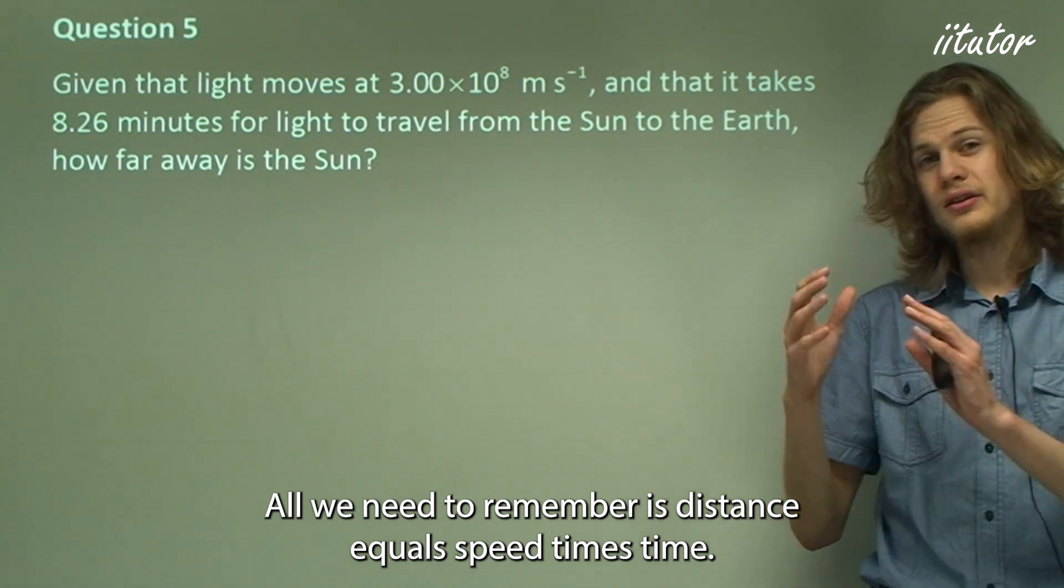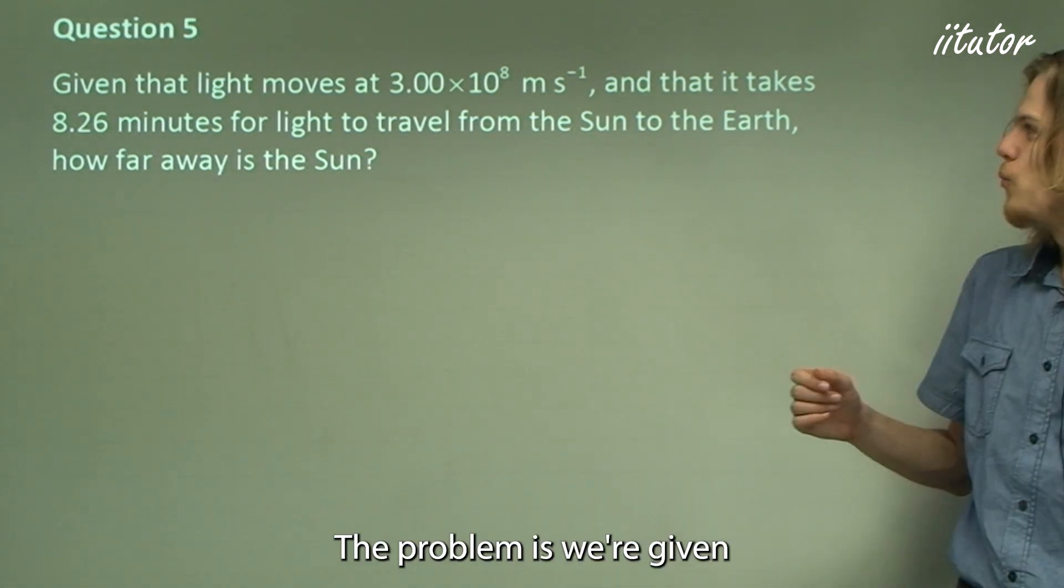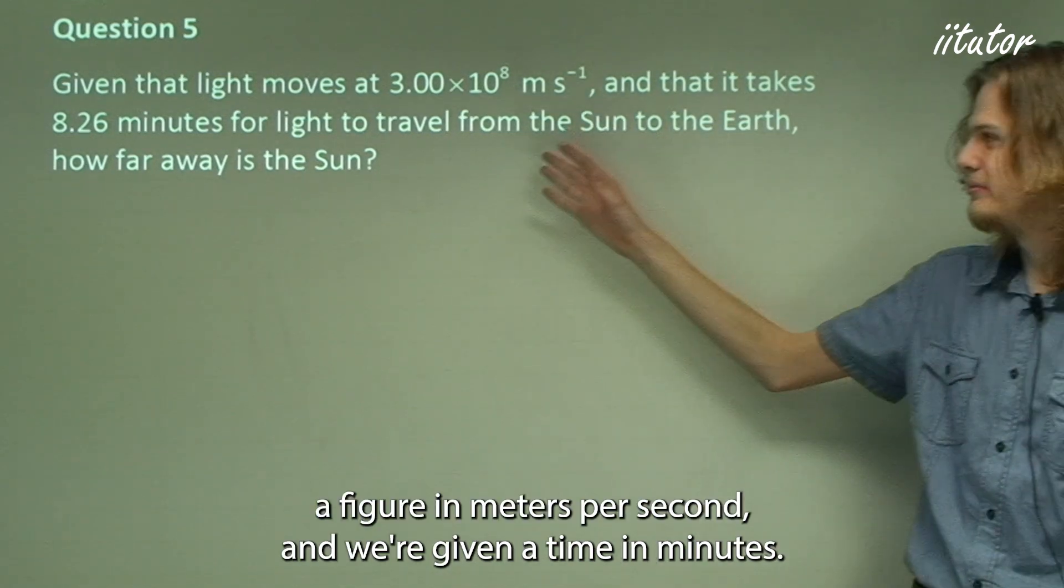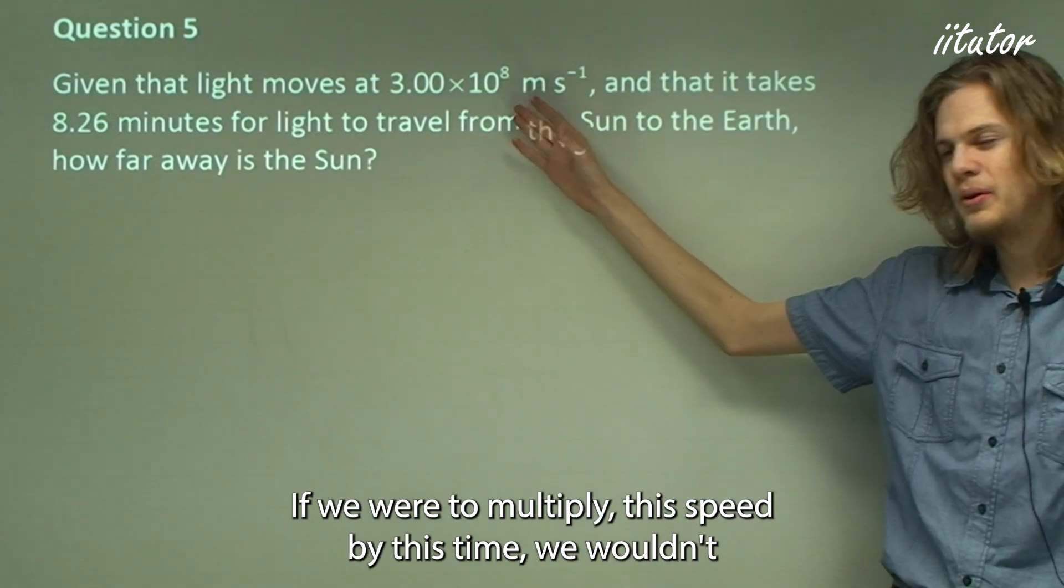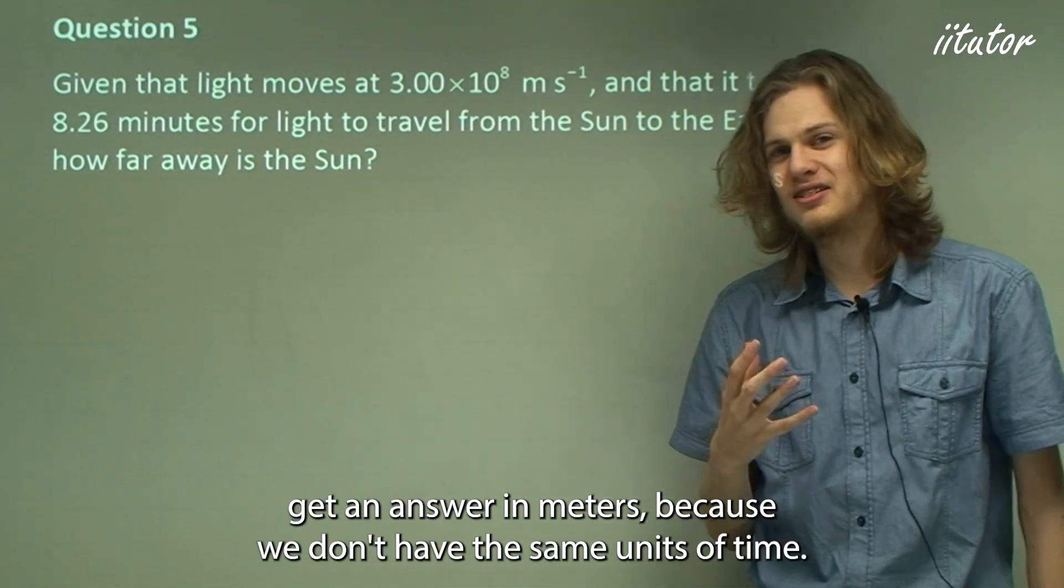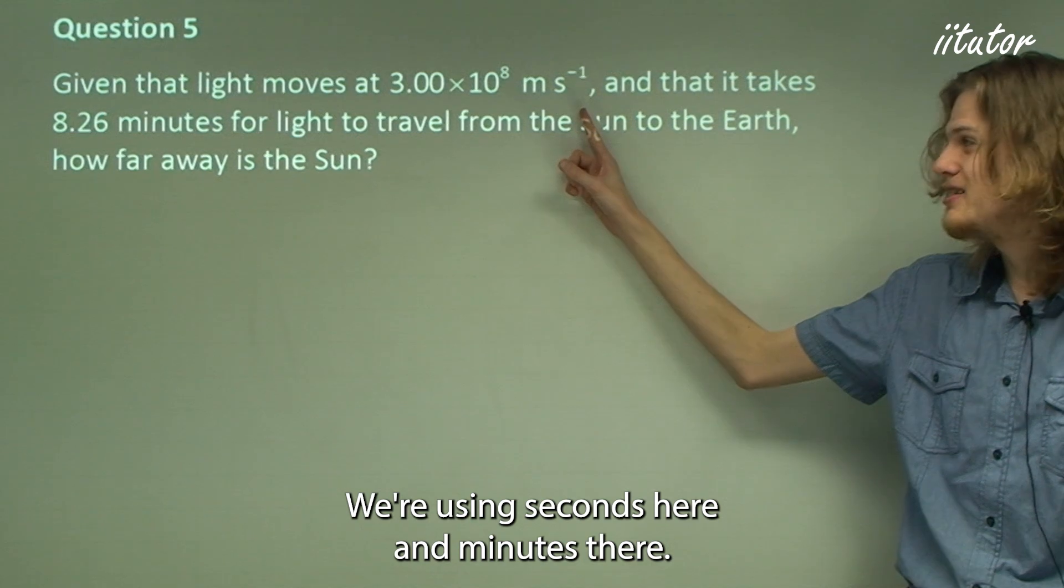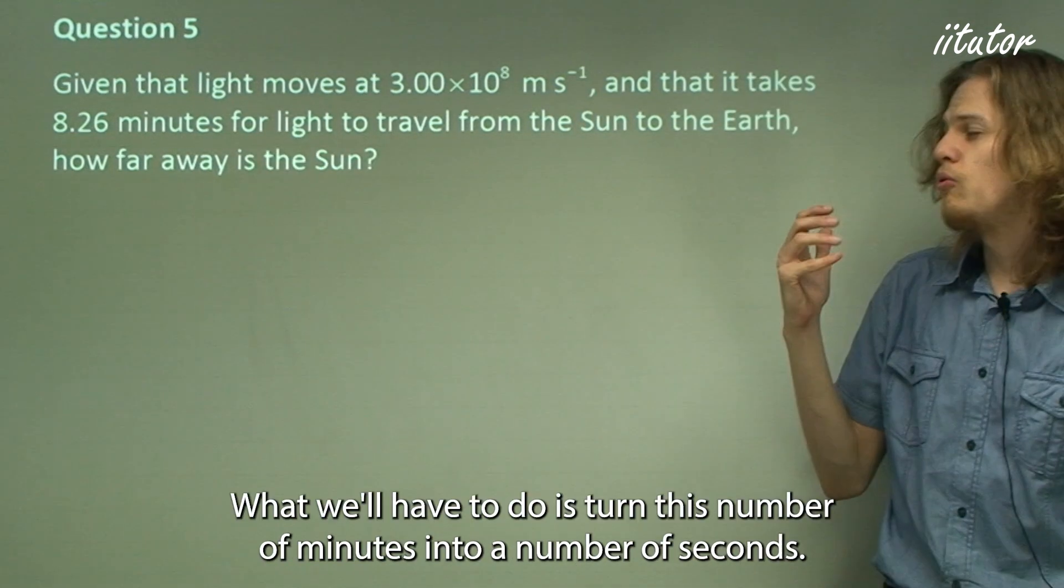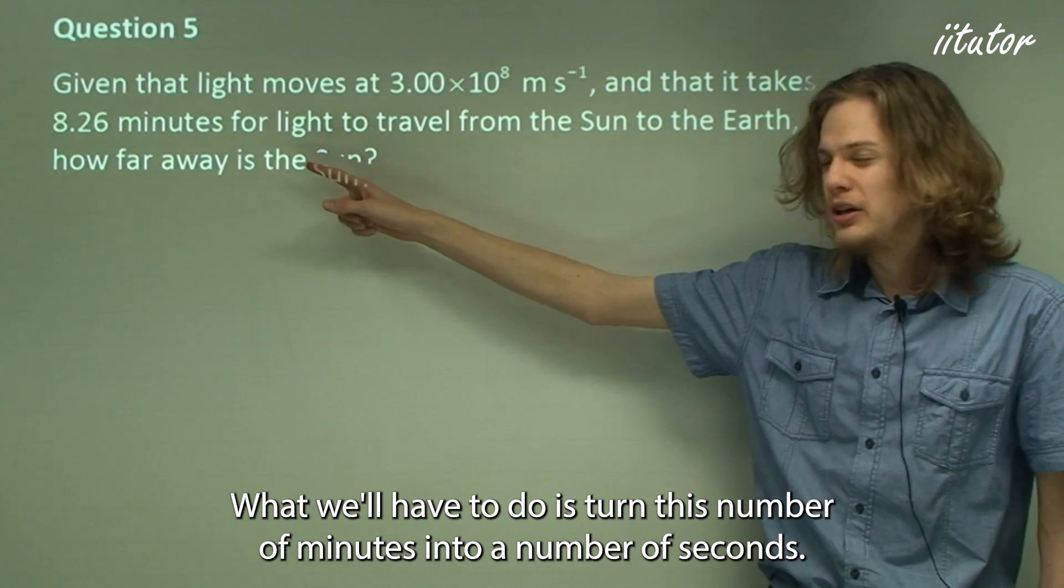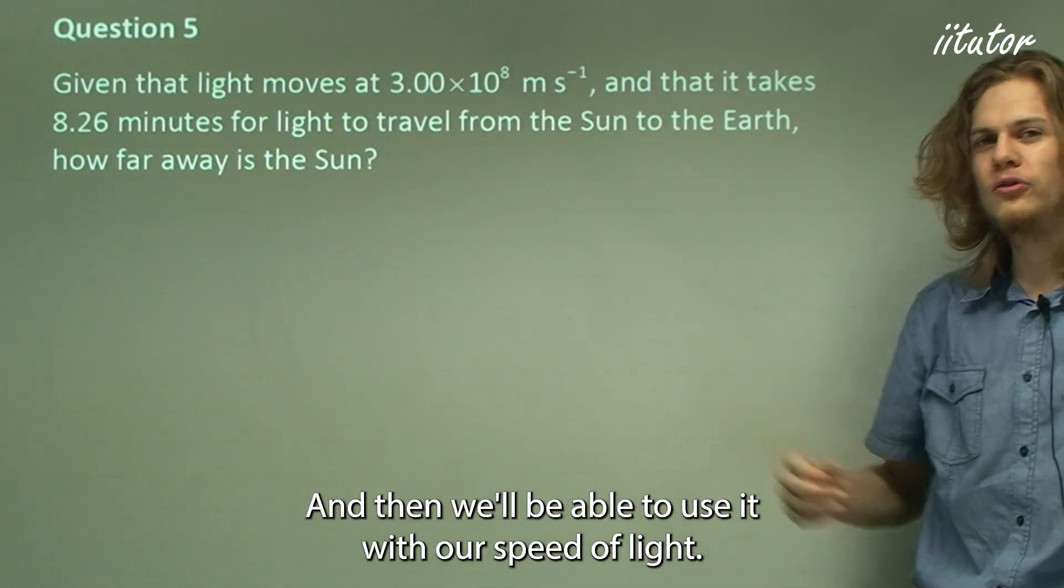All we need to remember is distance equals speed times time. The problem is we're given a figure in meters per second, and we're given a time in minutes. If we were to multiply this speed by this time, we wouldn't get an answer in meters, because we don't have the same units of time. We're using seconds here and minutes there, and so we can't really mix these up. What we'll have to do is turn this number of minutes into a number of seconds, and then we'll be able to use it with our speed of light.